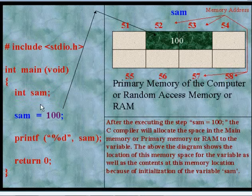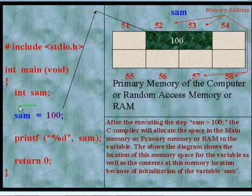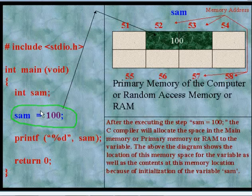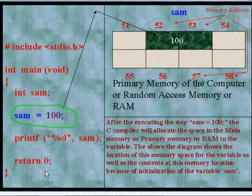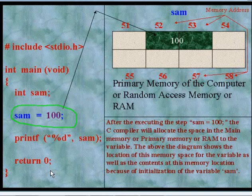Now see the next statement: sam = 100; This is an executable statement. This is the initialization of variable sam by the value 100, where 100 is an integer constant. After execution of this statement, the memory will be allocated.